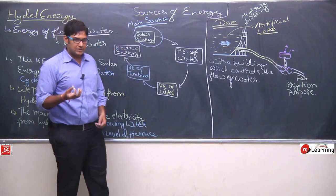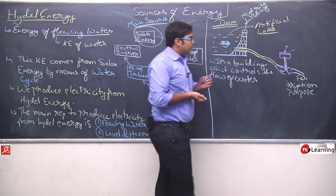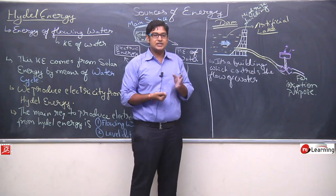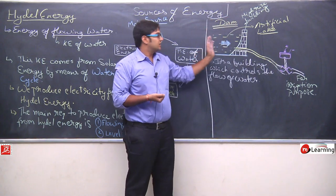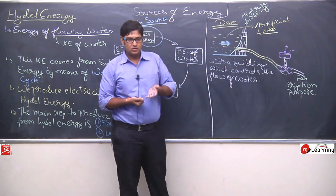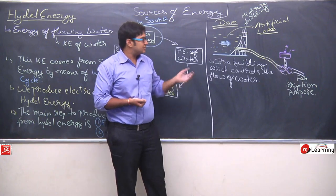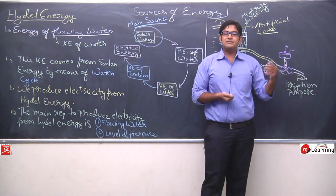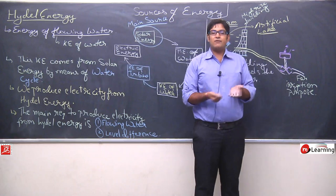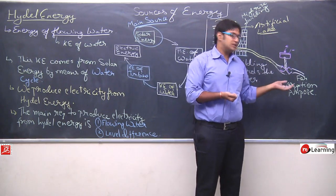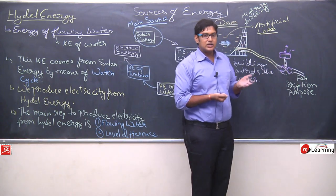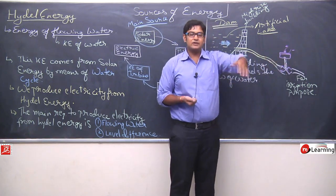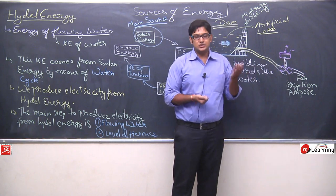यह पानी turbine में absorbed नहीं होता — it basically turbine को घुमा के आगे निकल जाता है। इस पानी को हम irrigation purpose के लिए भी use कर सकते हैं। जो यह पानी निकल रहा है, यहाँ से बहुत सारी tributaries बना सकते हैं। अलग-अलग खेतों में जाके यह पानी अपने आप mix हो जाएगा — छोटी-छोटी नहरें बना के। Dam generally city के बाहर बनाए जाते हैं जहाँ open space हो और पानी store करने की जगह हो।